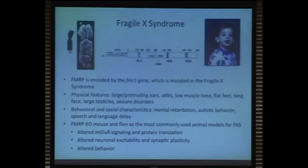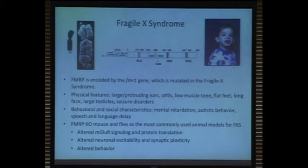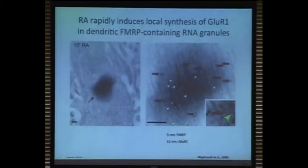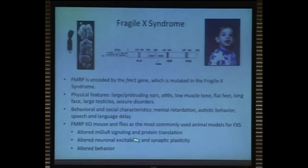I don't need to tell this audience what Fragile X syndrome is, but to say it's caused by mutation in the FMR1 gene. Most available methods for studying Fragile X in animal models use FMRP knockout mice. One of the leading theories is the mGluR theory, which shows hyperactive mGluR signaling, and therefore the protein translation regulated by mGluR signaling is abnormal in Fragile X animals and likely in patients. There are also additional reports of altered neuronal excitability and altered behavior.